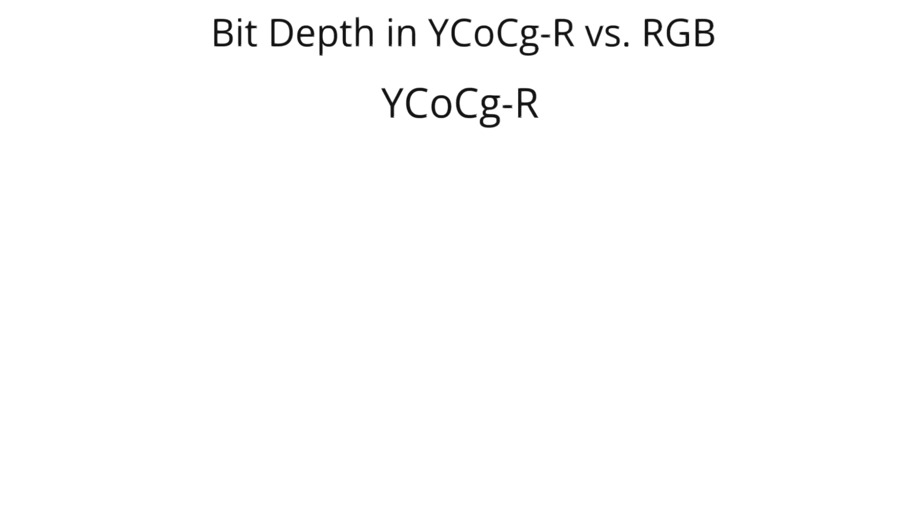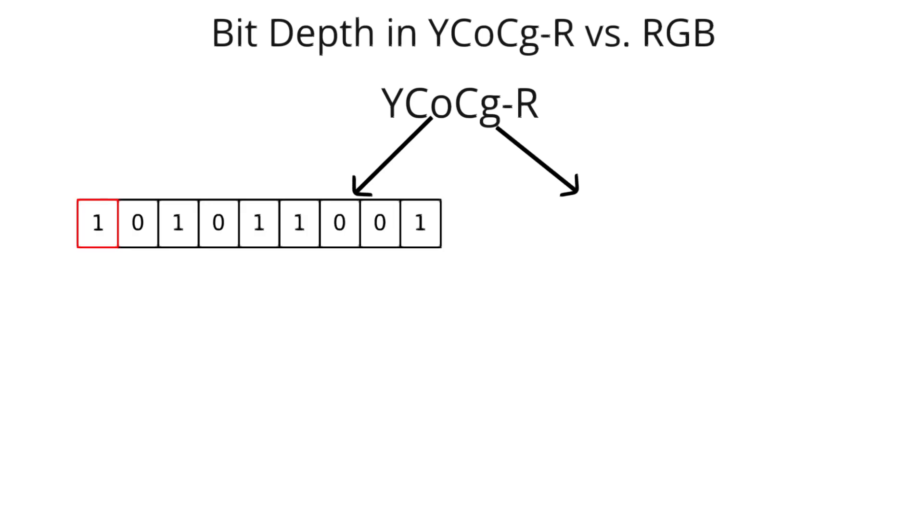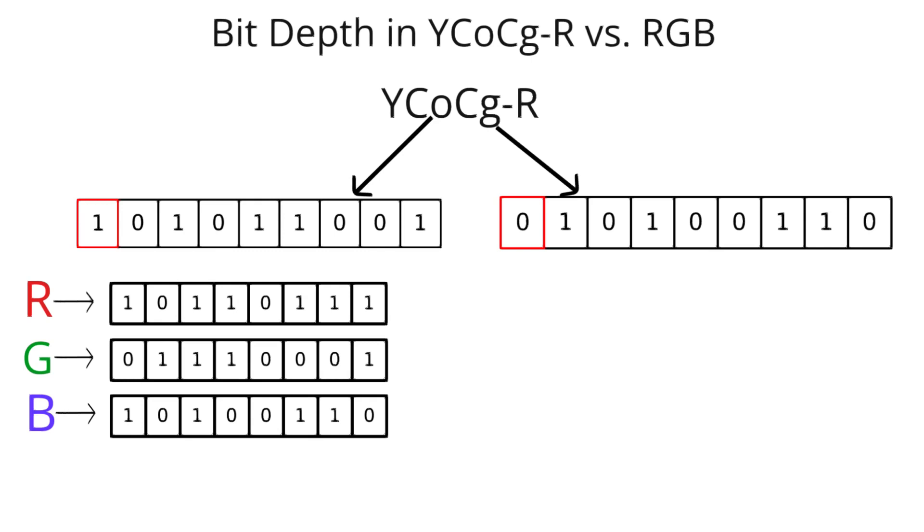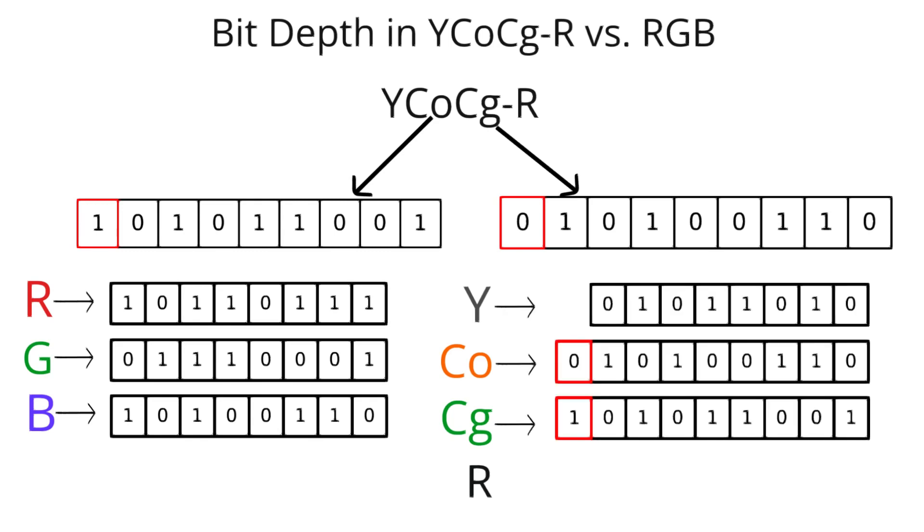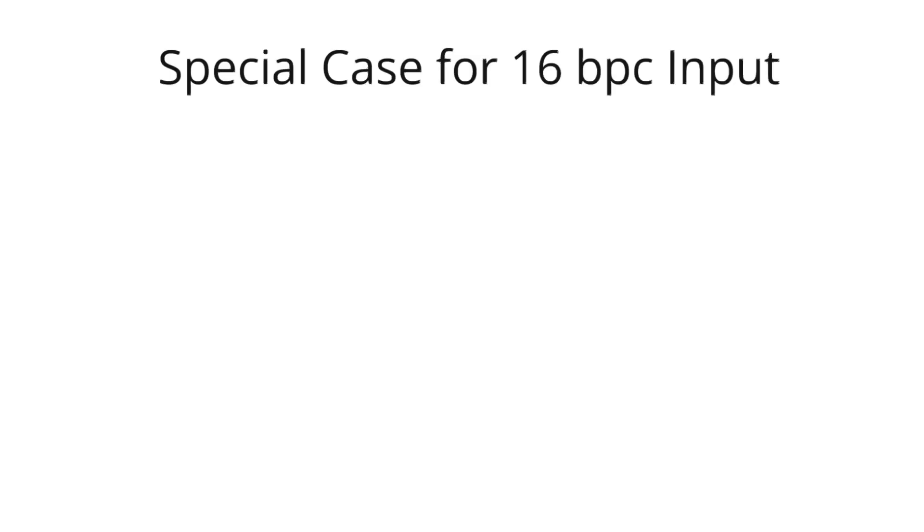In YCOCGR, each of the two chroma components CO and CG has one more bit than the corresponding RGB components. This is done to preserve the color information more accurately during the conversion process. For example, if the RGB input is 8 bits per component, the CO and CG components in YCOCGR will be 9 bits per component.